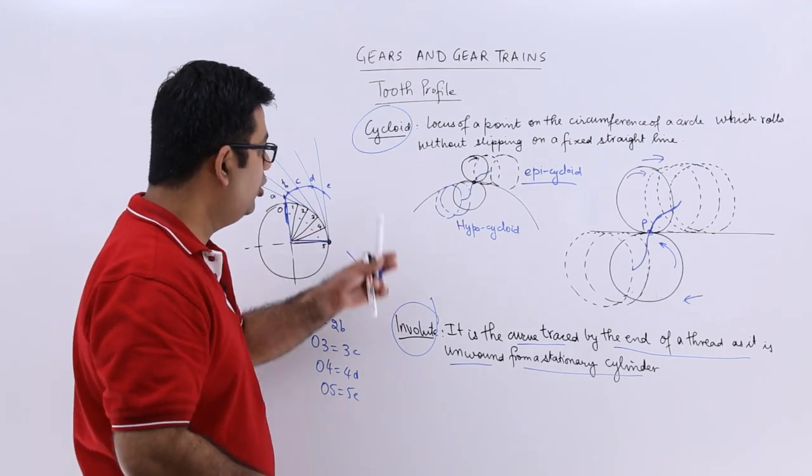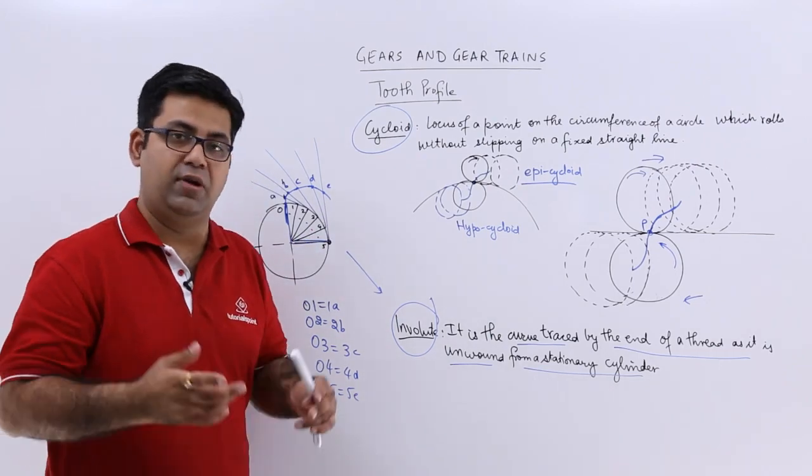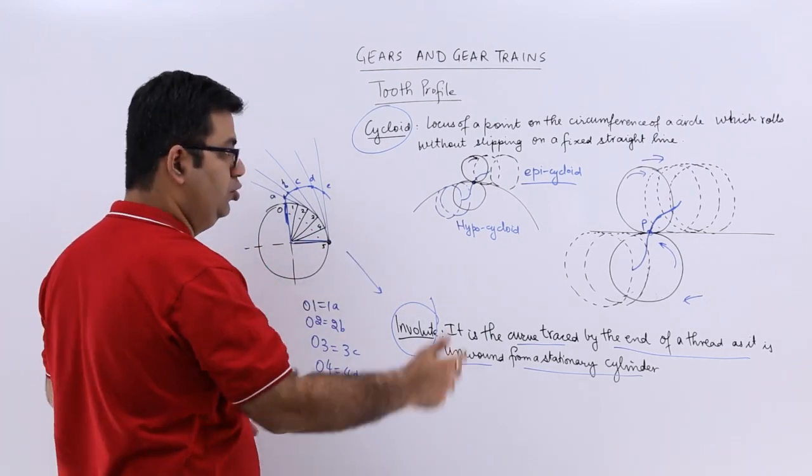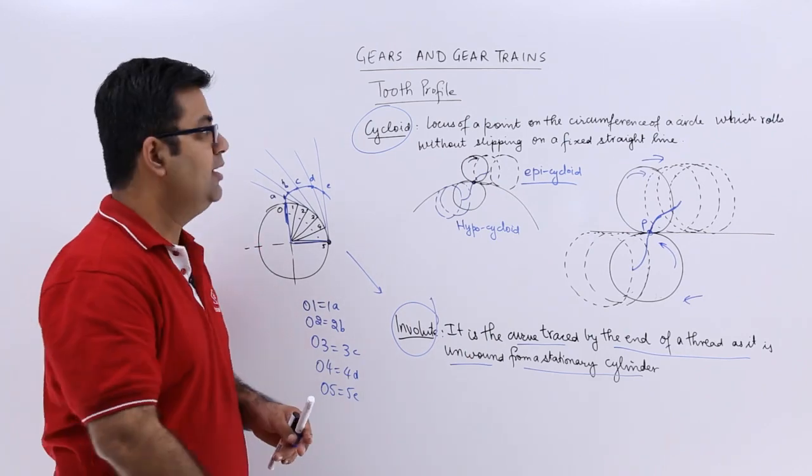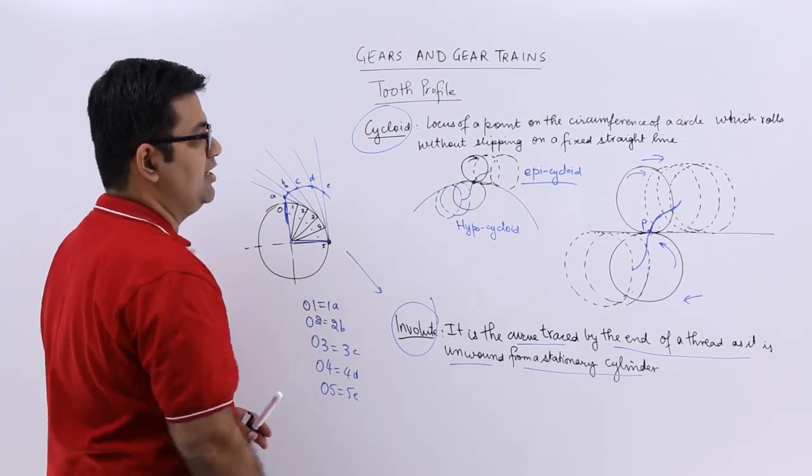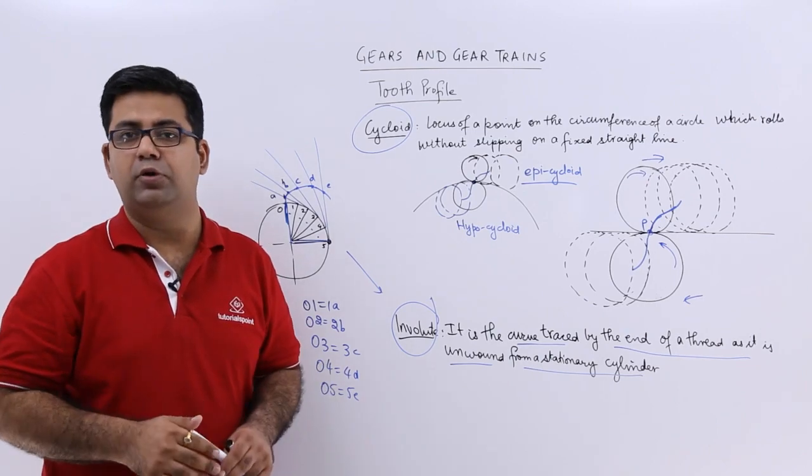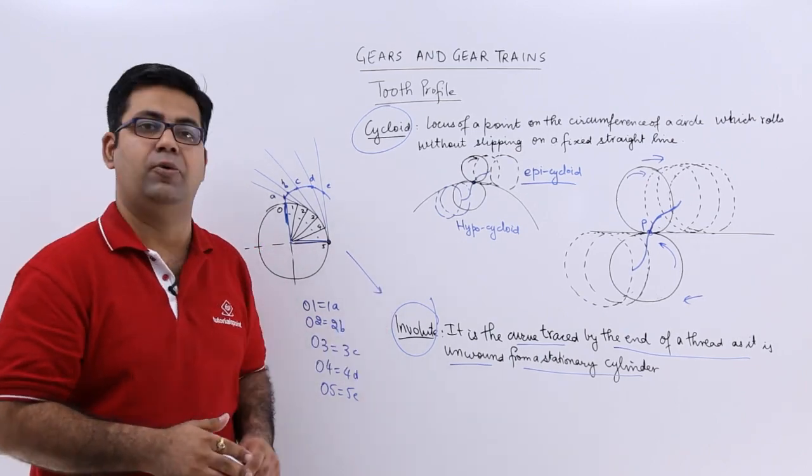So these are your two tooth profiles. So your gear can have any of these two tooth profiles. So I hope you have understood the basics of the tooth profile. Now let us move on to some question solving on this topic.